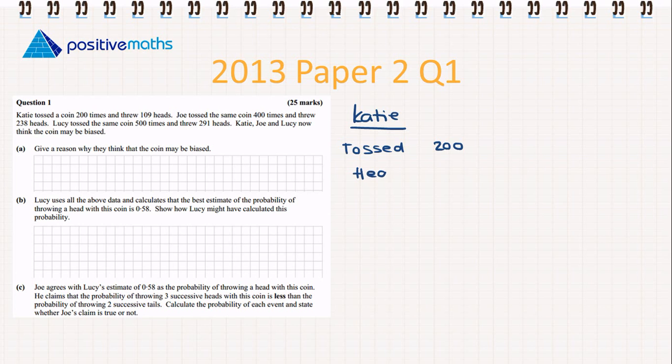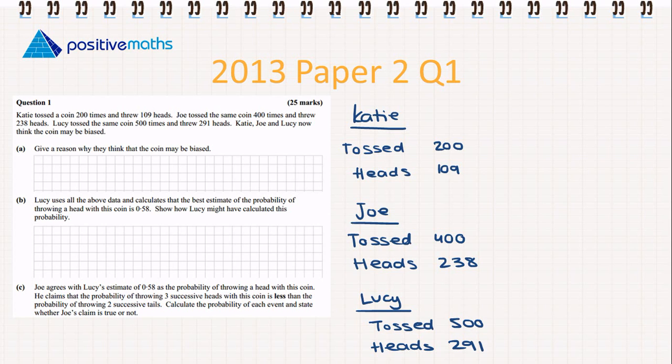got heads 109 times. For Joe, he tossed the coin 400 times and got heads 238 times. And for Lucy, she tossed the coin 500 times and got heads 291 times.